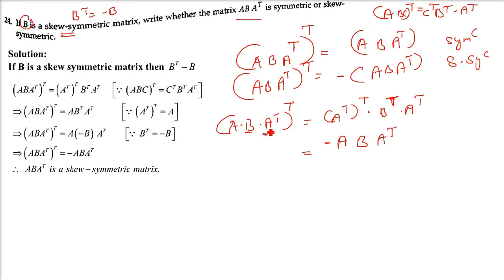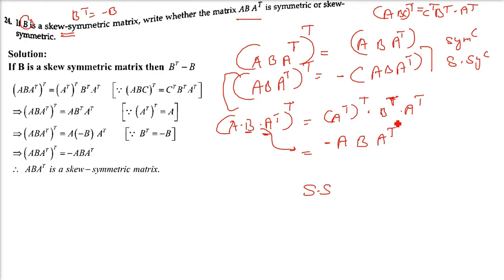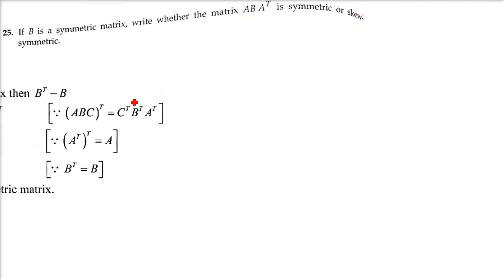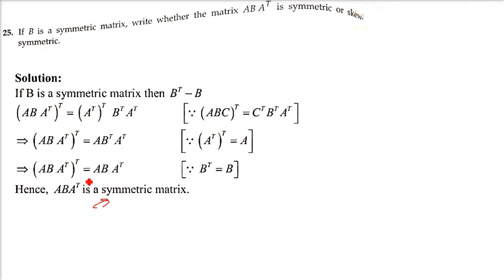Since taking the transpose gives the negative of the original matrix, ABAᵀ is a skew-symmetric matrix. If instead B were symmetric, Bᵀ = B and the positive sign would remain, making ABAᵀ symmetric.